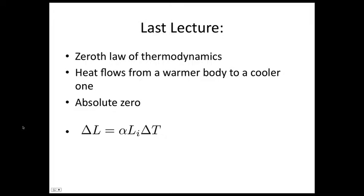In classical physics, absolute zero is where all motion ceases, though some other things start to happen around that temperature. You met the equation which tells you how the length of a solid changes as it is heated — this is just an approximation. The change in length is equal to alpha, the thermal expansion coefficient, times the initial length, times the change in temperature.